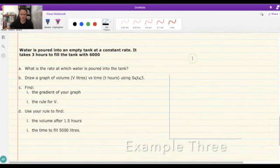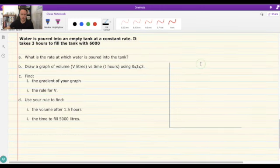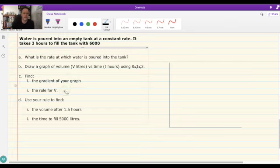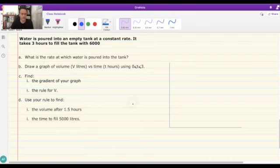Last example, a classic for some who've been in the business for a while. Water's poured into an empty tank at a constant rate. It takes 3 hours to fill the tank with 6,000 litres of water. What is the rate at which water is poured into the tank? If we think about that, it's 6,000, that's how much the tank's risen, 6,000 divided by 3, that gives us a total of 2,000 litres per hour. That's our rate, and that's how we find the gradient as well.